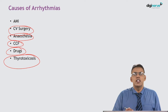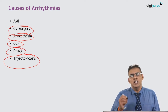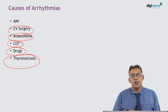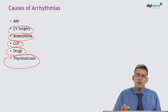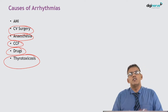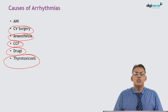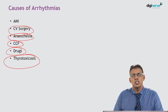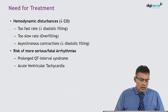Thyrotoxicosis also sensitizes the myocardium to the effects of epinephrine and norepinephrine, which are normal catecholamines present in the body. Thyrotoxicosis accentuates the effects of the sympathetic system and therefore predisposes these patients to various arrhythmias.